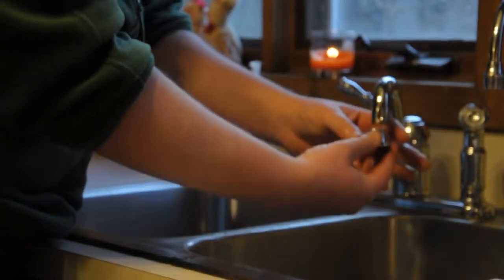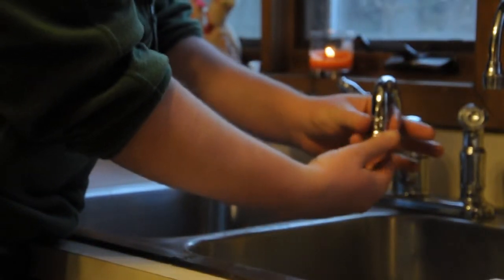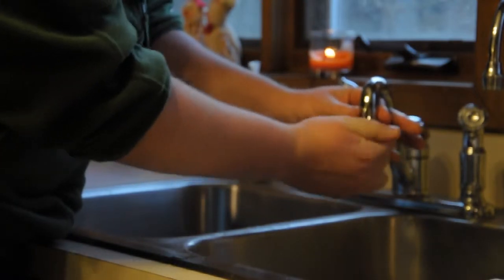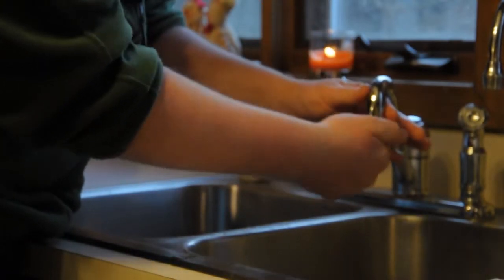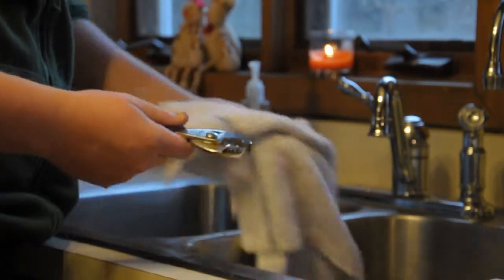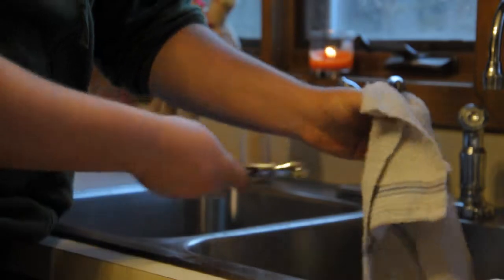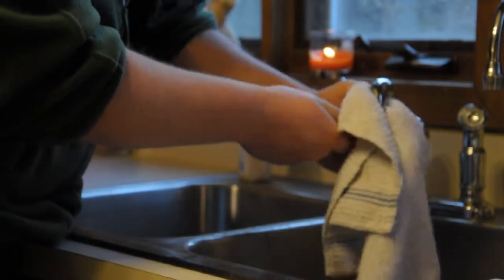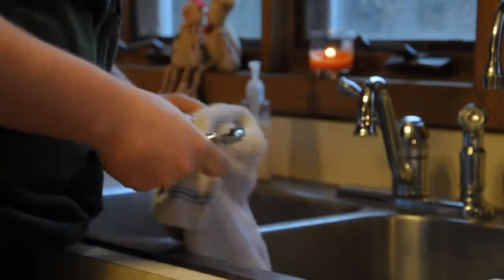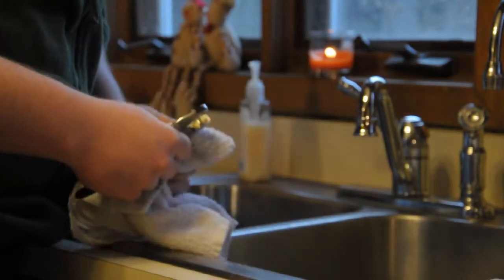Put the aerator back in place and finger tighten. Take your rag and pliers, place the rag over the aerator, and using the pliers, gently tighten. Be sure you don't over-tighten and strip out your threads.